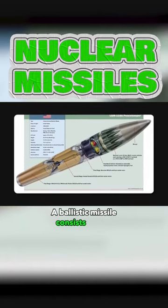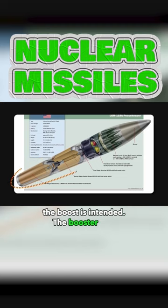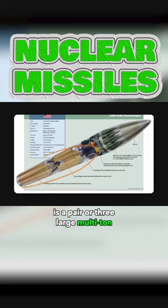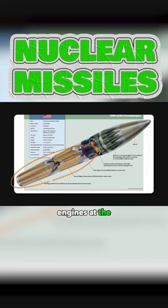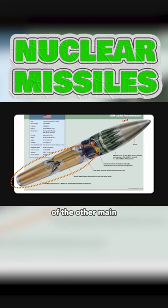A ballistic missile consists of two main parts: the booster part and the other part for which the boost is intended. The booster part is a pair or three large multi-ton stages loaded with fuel and engines at the bottom. They give the necessary speed and direction to the movement of the other main part of the rocket — the head.